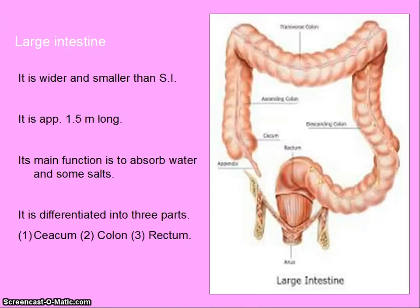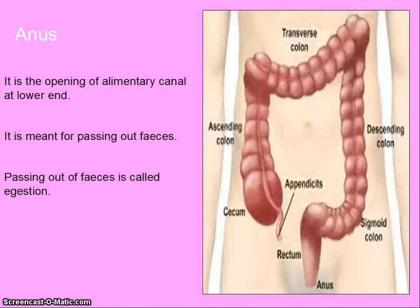Large intestine is wider and shorter than small intestine, approximately 1.5 meters long. Its main function is to absorb water and some salts. It is differentiated into three parts: cecum, colon and rectum. Anus is the opening of elementary canal at the lower end. It is meant for passing out feces. Passing out feces is called egestion.